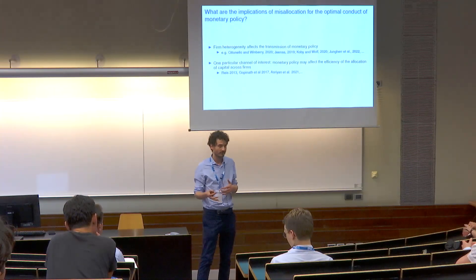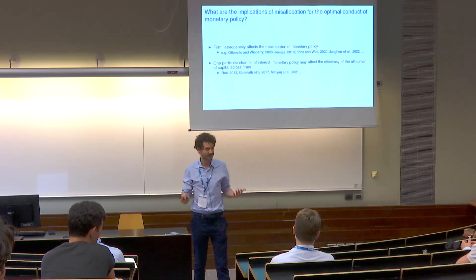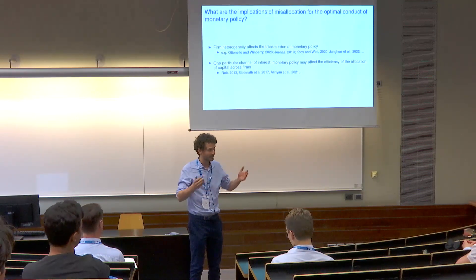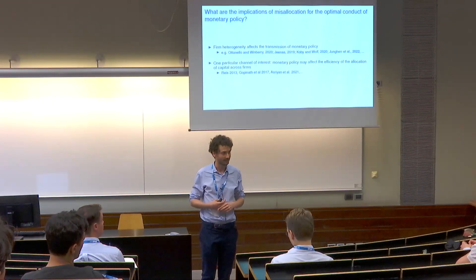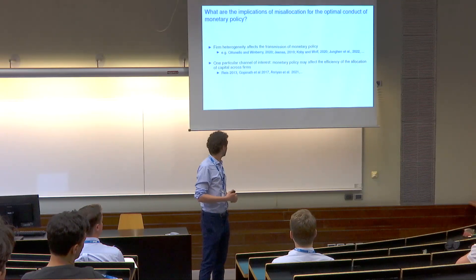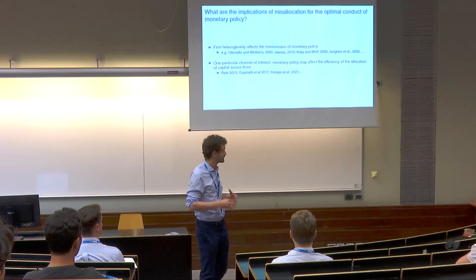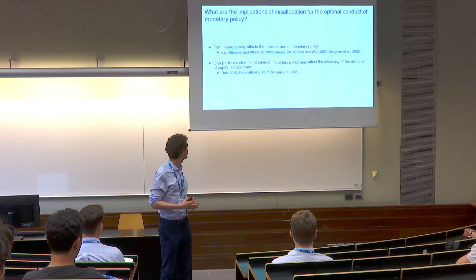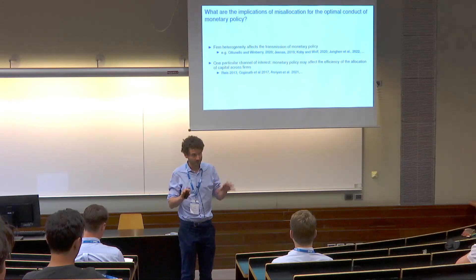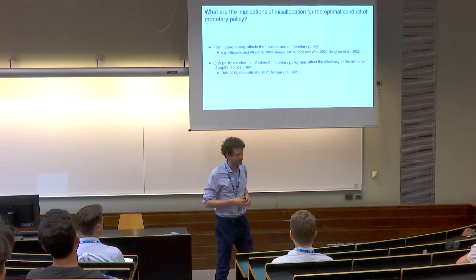From there it was only a small step for central bankers to ask: if low real interest rates are bad for capital misallocation, what does this mean for the conduct of monetary policy? Extrapolating, low nominal interest rates should also be bad for capital misallocation — which becomes an argument for the inflation hawks. Given this debate, what we try to do in this paper is to provide an answer: what is the implication for the optimal conduct of monetary policy of capital misallocation? How should optimal monetary policy be shaped by the interaction with capital misallocation?